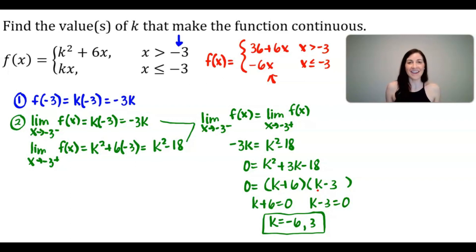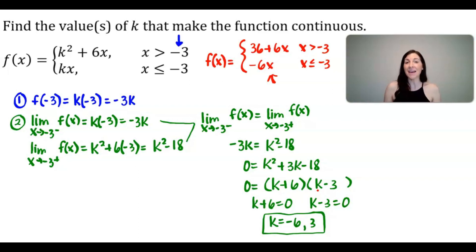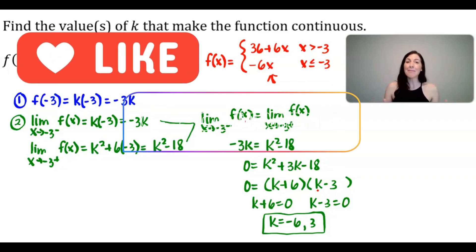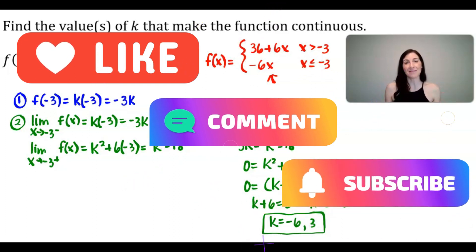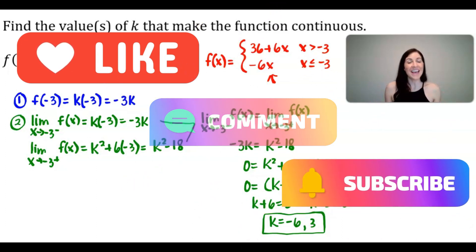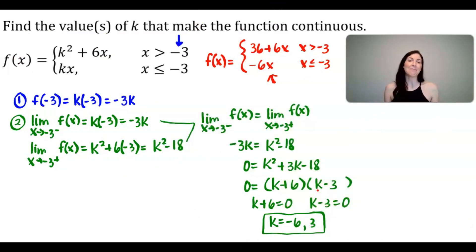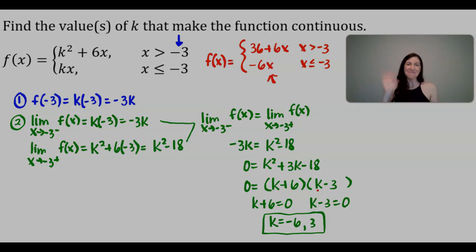That's it! We found the values of K that make this function continuous: K equals negative 6 and K equals 3. I really hope these videos are bringing value to you. Give it a like, comment below, and subscribe so you're notified of weekly videos. Have a great day everyone, and we'll see you in the next video!